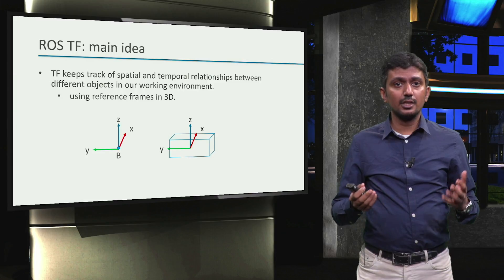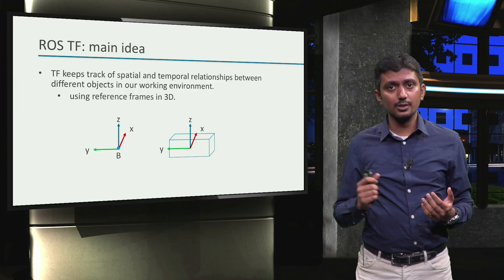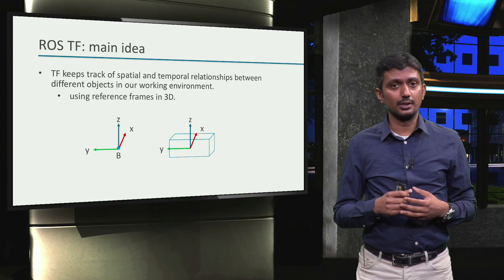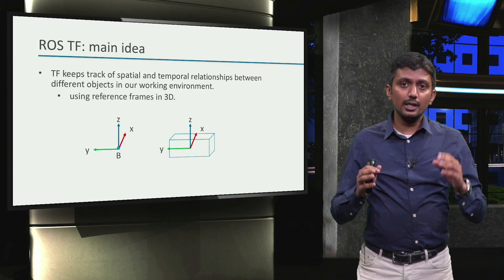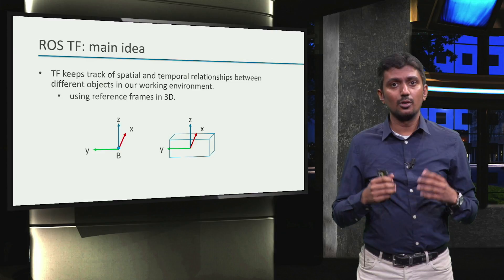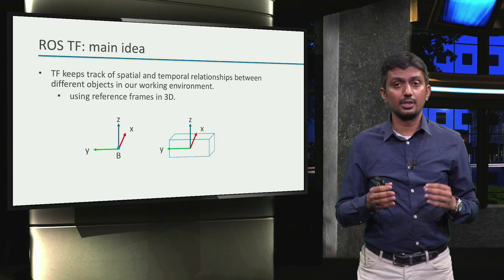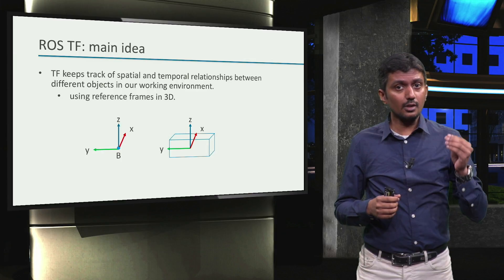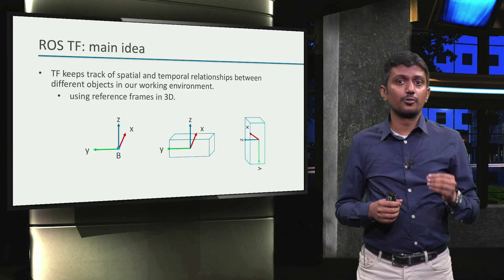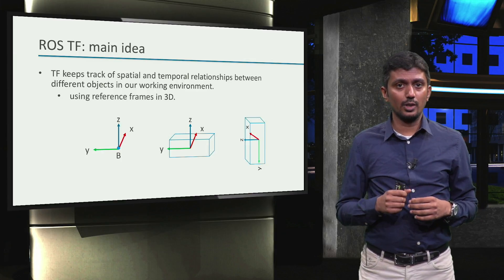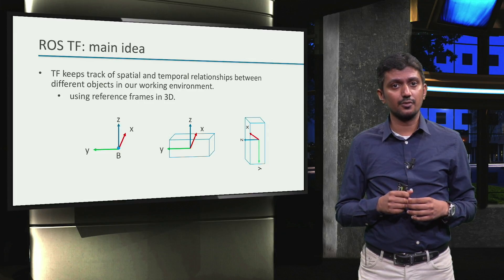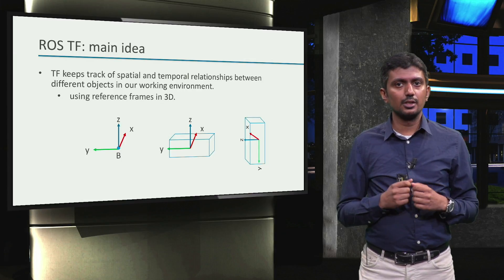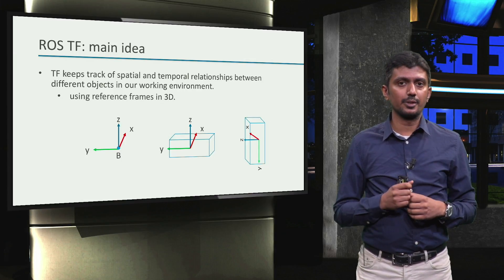On similar lines, if it is a 3D object such as this box, then a corresponding reference frame for the object could be something like this. And the nice thing is such reference frames also provide a framework to represent rotations of objects in 3D. For example, this would be the result of rotating the box anticlockwise along the x-axis of the reference frame attached to it.